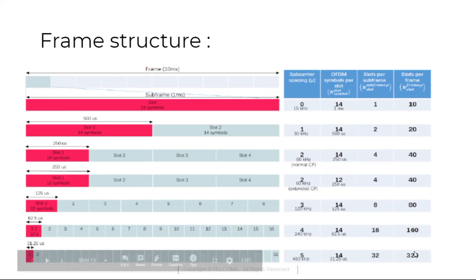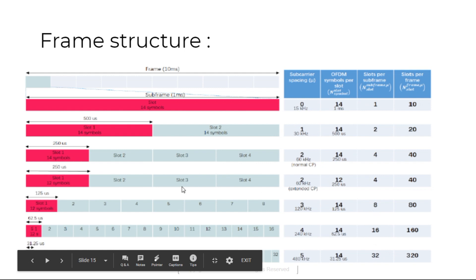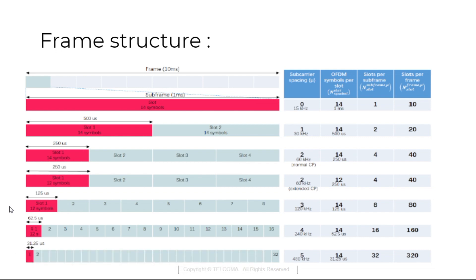This shows the slots per frame and slots per sub-frame, along with timing information. For 120 kHz sub-carrier spacing, there are 8 slots per sub-frame, 80 slots per frame, and 14 OFDM symbols per slot.